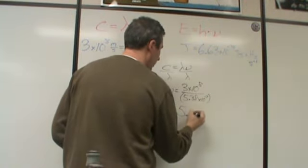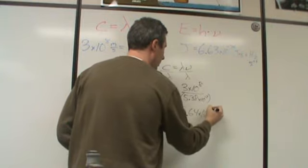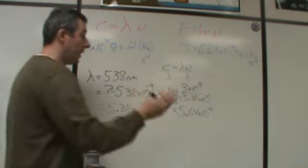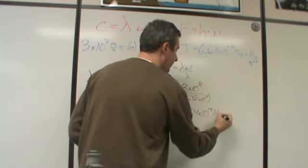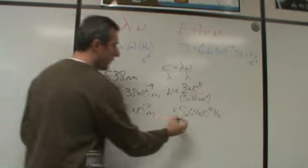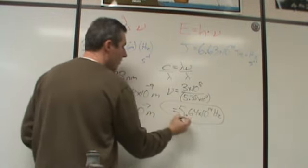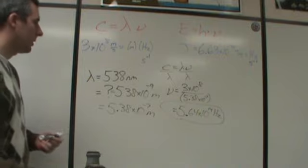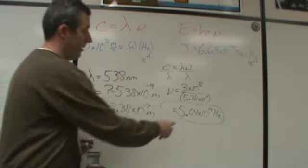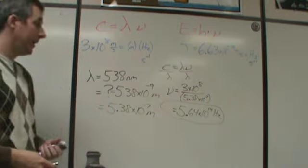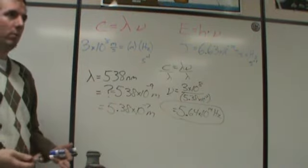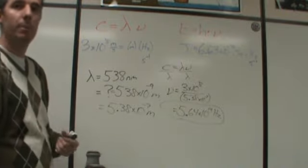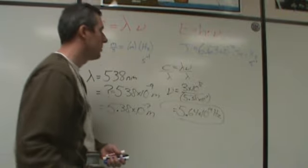When I plug this into a calculator that comes out to 5.64 times 10 to the 14th, and the units for that would be Hertz. So that is the frequency of that light. Now I know how often I'm seeing a pulse of an electron acceleration repeating itself. That's 564 trillion Hertz, so every one second that goes by you're seeing 564 trillion pulses of that green light, which is beyond something that we would be able to interpret aside from our eyes.